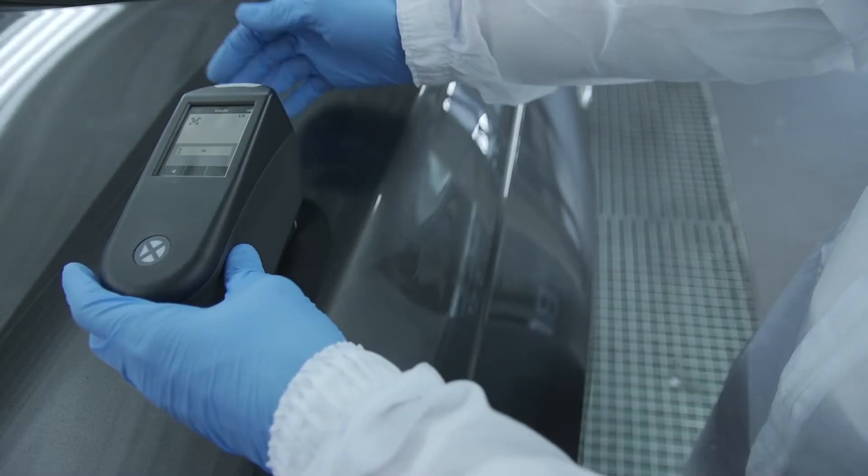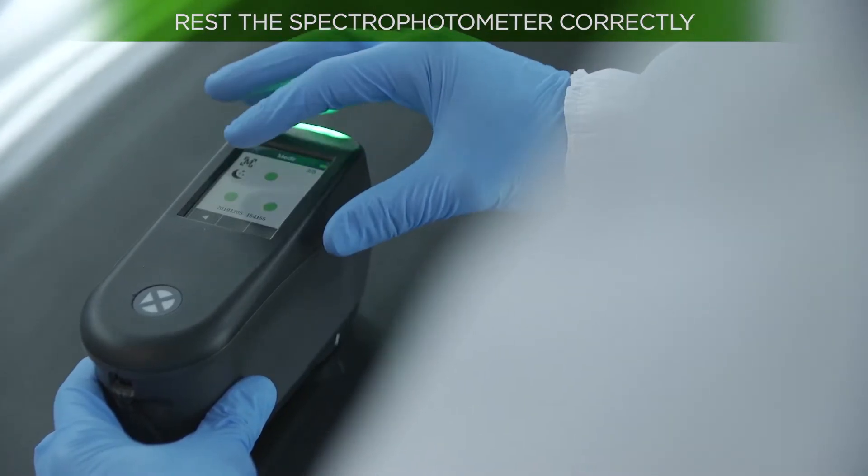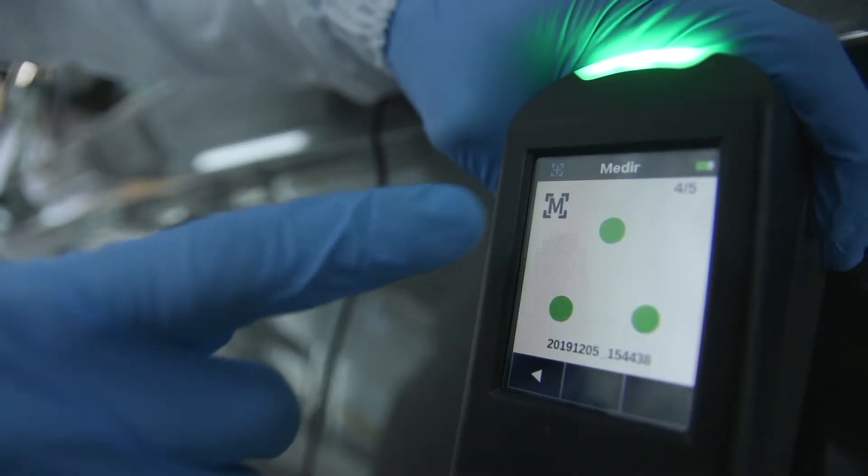Then place the spectro in the polished area. It must be rested evenly on the surface. If the device is properly placed, it will show green lights. Otherwise, these will be red.